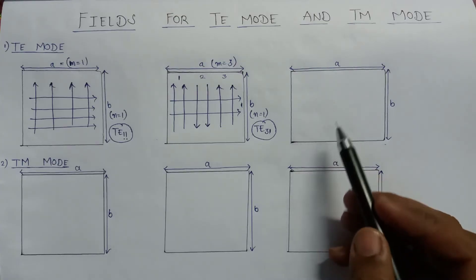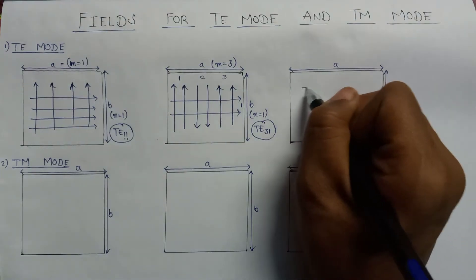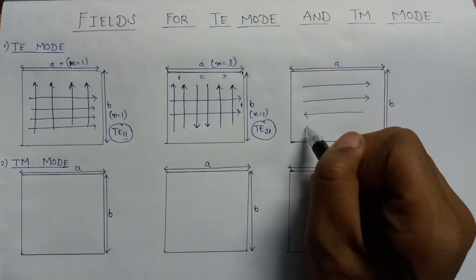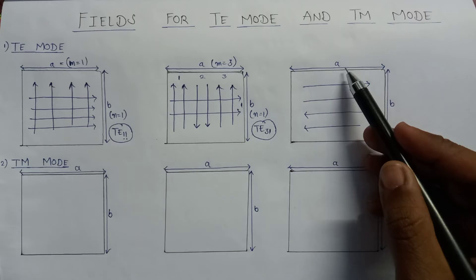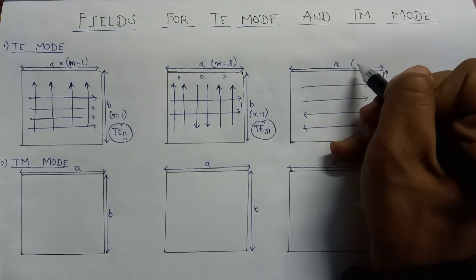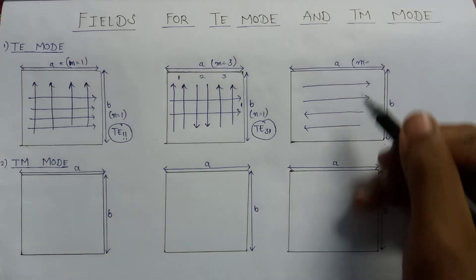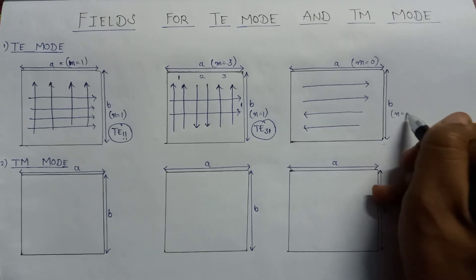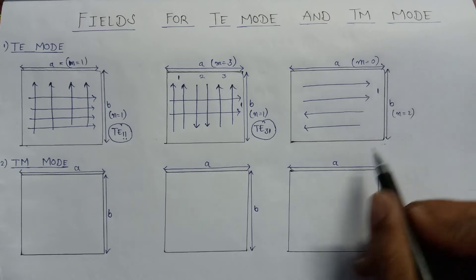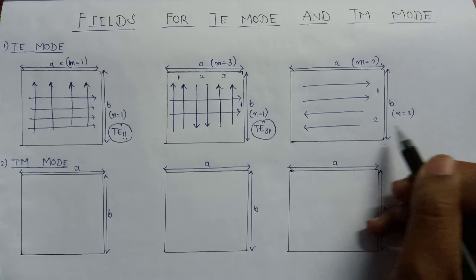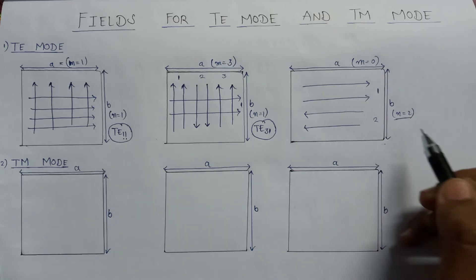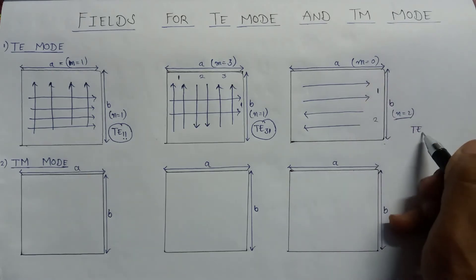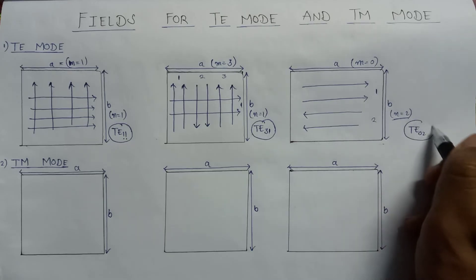Now let us take the last example associated with TE mode. Here is the variation with respect to B — the electric field varies like this with respect to B — and there is no variation with respect to A in this example. So if we calculate the variation with respect to A, it comes to 0. But if we calculate the variation with respect to B, then the value of N will become 2, because here is one variation in the right-hand side direction and here is the left-hand side direction, making the second variation. So the type of TE mode is TE02.